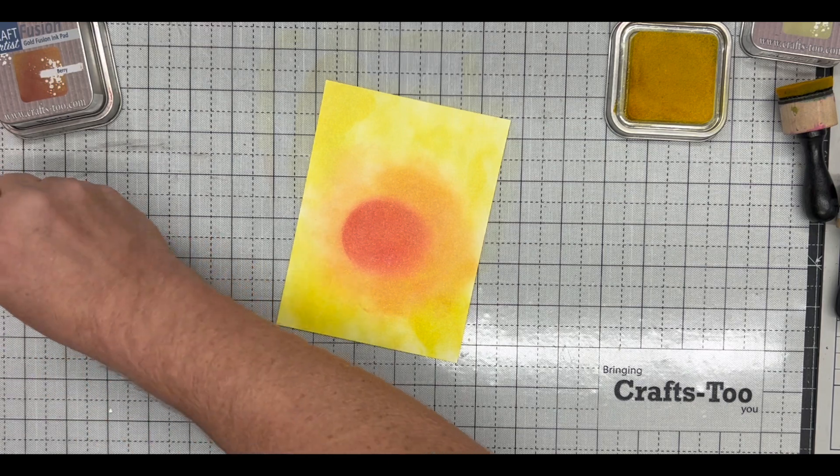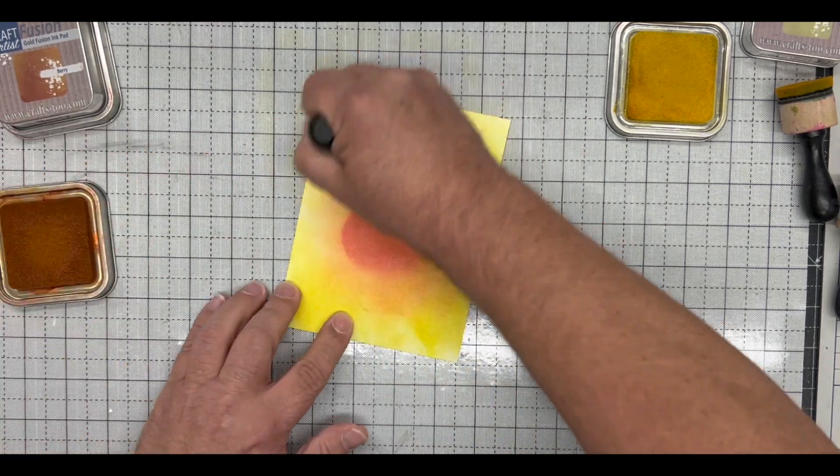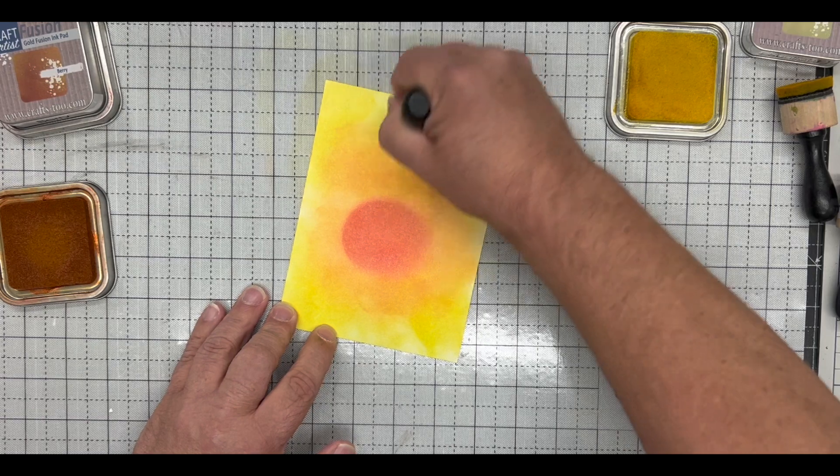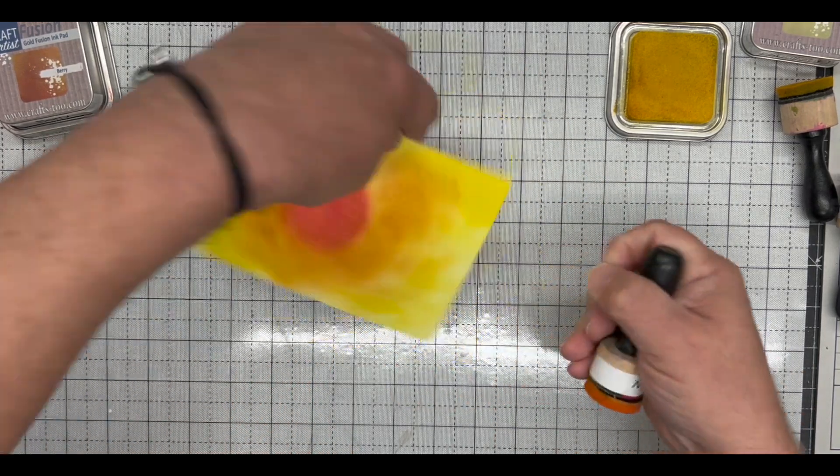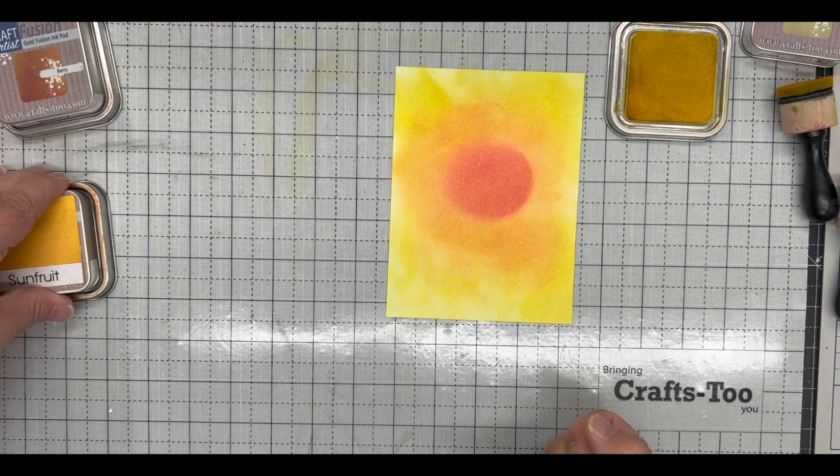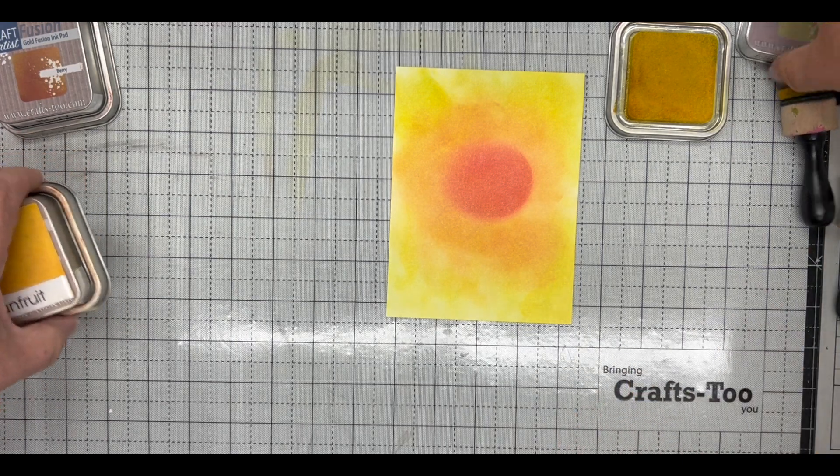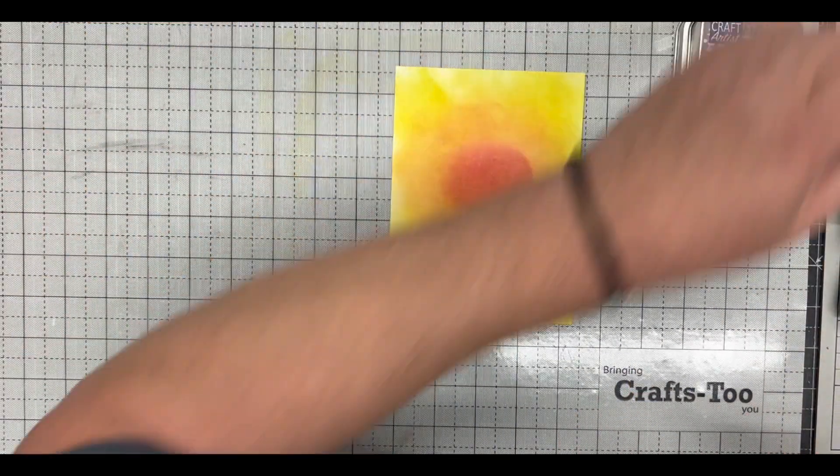I'm just going to go back with a little bit more sun fruit and blend across and we get that really rough blend. So there we've got our piece completely finished with our three colors of ink.